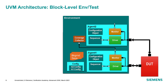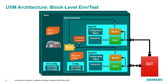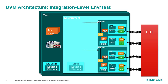Environments instantiate whatever components you need. If you have multiple interfaces on your DUT, you'll have multiple agents, plus coverage collectors and probably a scoreboard. The environment gets its configuration and uses it to configure the agents, possibly using default settings if not overridden by the test. The test sets configuration and factory settings and specifies test sequences. Notice that multiple tests can use the same environment. Since environments are components, they can be instantiated in other environments hierarchically.